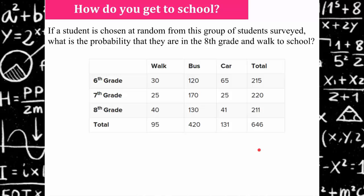Okay so here's a question. You're given a bivariate data table. It's got three grade levels of students and it tells you they had three choices. Did you walk, ride the bus, or did you take a car? Were you driven to school? Much bigger survey. You're asked if a student is chosen at random from this group of students surveyed, what is the probability that they are in the eighth grade and walk to school?